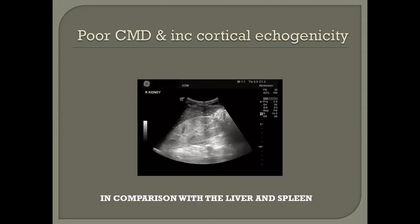Here we have a pictorial presentation of poor cortical medullary differentiation. We can see that the cortex is hyperechoic compared to the liver, which is hypoechoic. So we have increased cortical echogenicity and we can no longer differentiate between the cortex and the medulla or the renal sinus, which is usually hyperechoic. In terms of echogenicity, we need to compare it with the liver and the spleen.